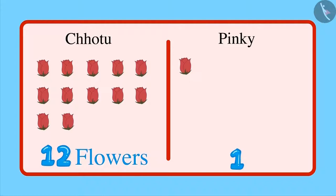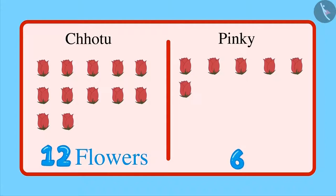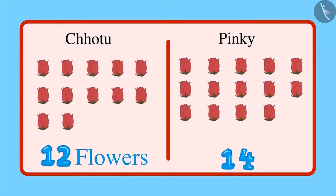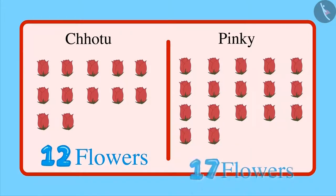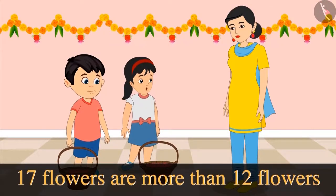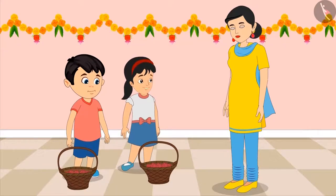Now counting Pinky's flowers: 1, 2, 3, 4, 5, 6, 7, 8, 9, 10, 11, 12 — that is equal to the number of flowers Chotu has brought. But there are 13, 14, 15, 16 and 17 flowers. This means Pinky has brought 17 flowers. 17 flowers are more than 12 flowers. Therefore, I brought more flowers. Isn't it, mom? Yes, Pinky, you are absolutely correct. Yay!